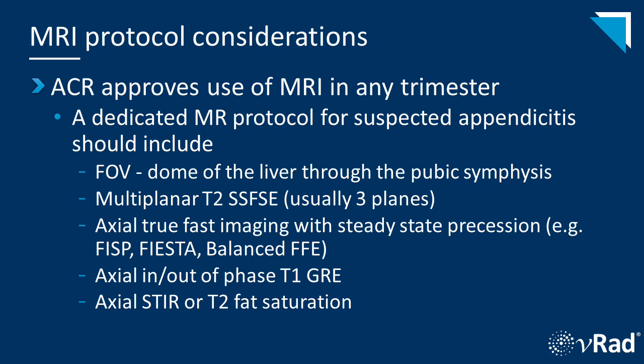Just a brief word on MRI protocol recommendations. The ACR approves use of MRI in any trimester. A dedicated MRI protocol for suspected appendicitis should include a generous field of view from the dome of the liver through the pubic symphysis, multi-planar T2 single shot fast spin echo — usually three planes — an axial true fast imaging with steady state precession (FISP or FIESTA, depending on which vendor you use), an axial in and out of phase T1, and an axial STAR T2 fat-suppressed image.